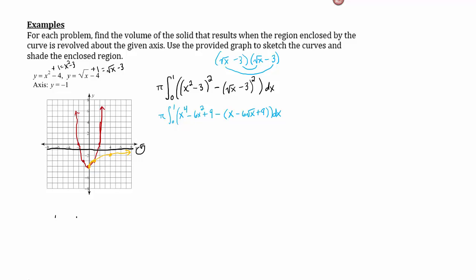We're going to add like terms if possible after we distribute the negative. So this is a negative x that doesn't have a like term, that'll be plus 6 square root of x. The 9's are going to cancel so that's something at least. So we have x to the fourth minus 6x squared, we've got minus x and plus 6 square roots of x. Now let's go ahead and change 6 square roots of x to 6x to the 1 half because we're going to use the power rule on this.